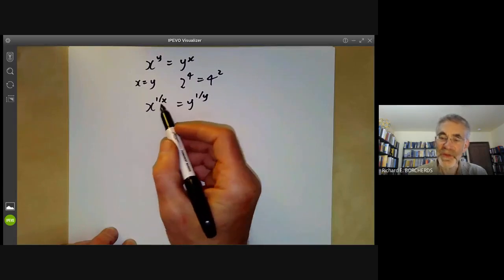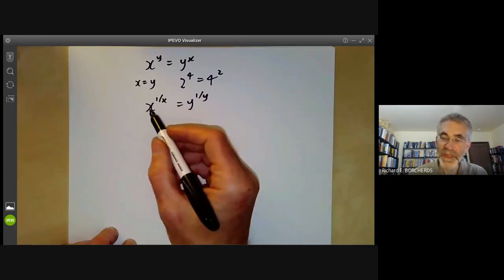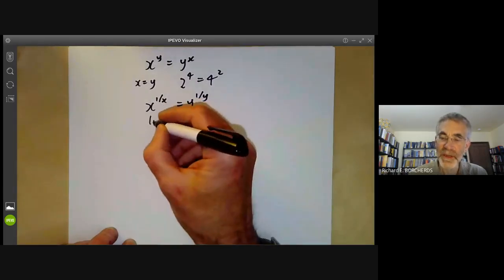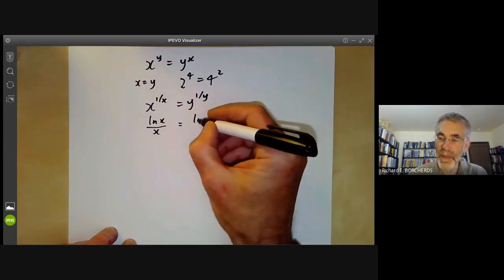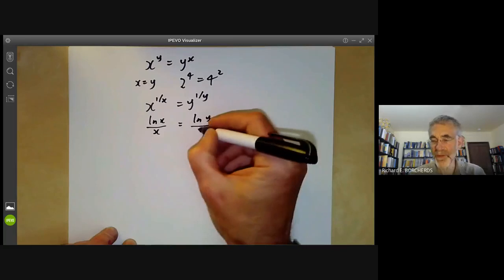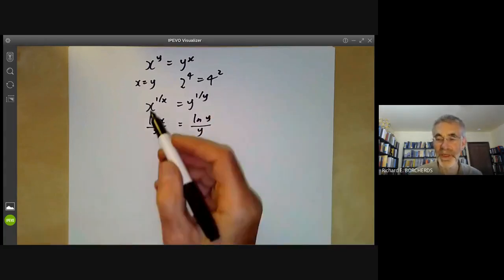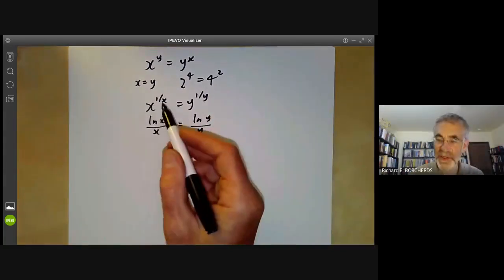We can take the logarithms of both sides. So the logarithm of this is just the logarithm of x over x, and that has to be the logarithm of y over y. So whenever we've got powers, it's best to write them in terms of logarithms and exponentials.